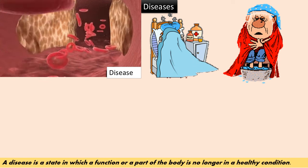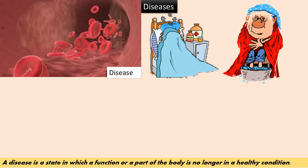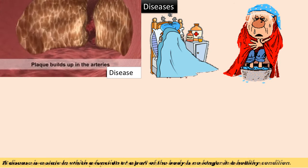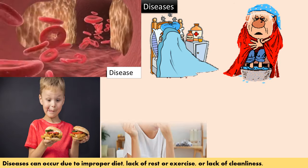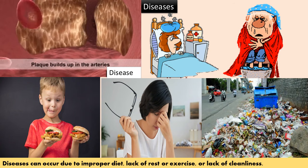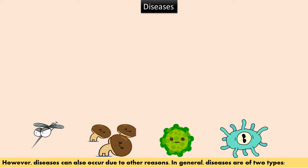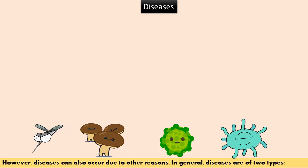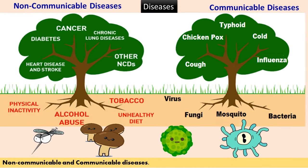A disease is a state in which a function or part of the body is no longer in a healthy condition. Diseases can occur due to improper diet, lack of rest or exercise, or lack of cleanliness. However, diseases can also occur due to other reasons. In general, diseases are of two types: non-communicable and communicable diseases.